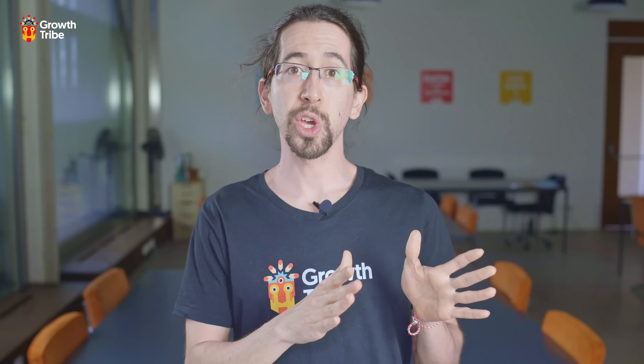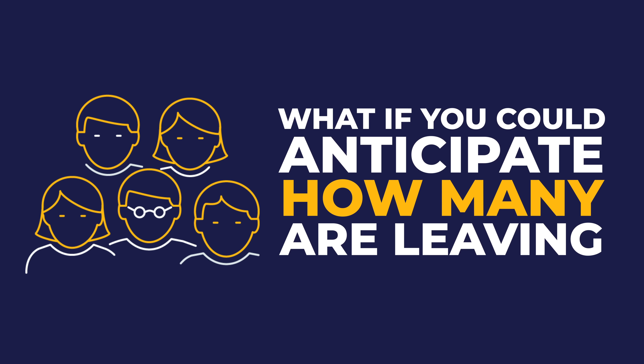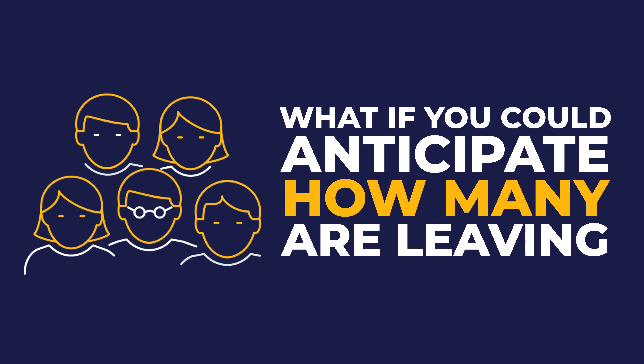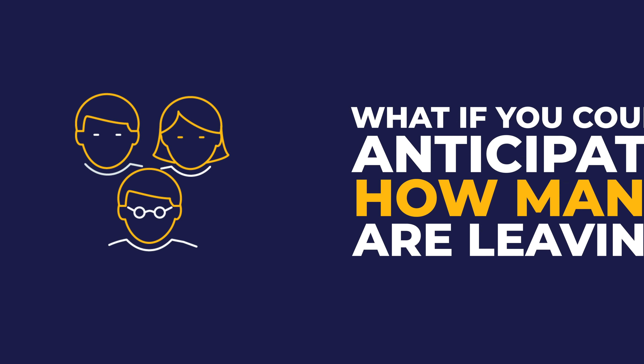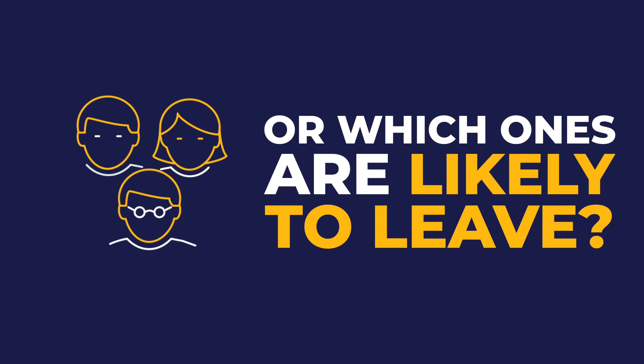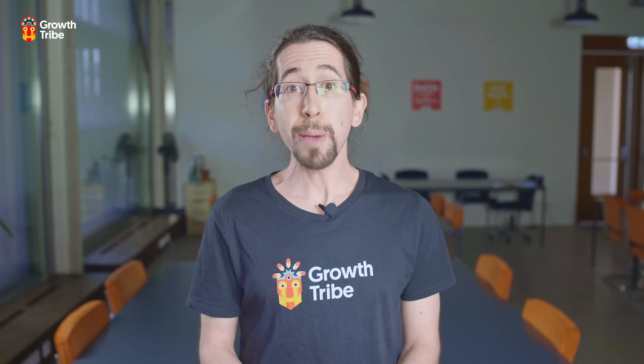Step two: predicting conversions. This is the difference between knowing what your customers have done and what your customers will do. For example, let's look at the retention stage of the Pirate Funnel. If you're data-driven, you already know the percentage of people leaving your business every month. However, what if you could anticipate how many people are leaving, or better, which customers are likely to leave? This is what an AI prediction model can do for you — telling you which customers are in the danger zone so you can rescue them before it's too late.